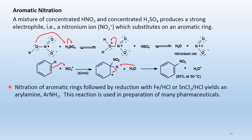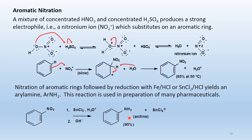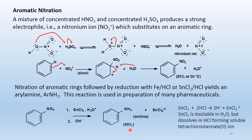Nitration of an aromatic ring followed by reduction — using iron in HCl or stannous chloride (SnCl2) in HCl — yields an aryl amine such as aniline. This reaction is used in the preparation of many pharmaceuticals. Nitrobenzene is reduced by SnCl2 in acid, followed by basification with hydroxide, producing aniline in high yield. SnCl2 is insoluble in water but dissolves in HCl, forming the tetrachlorostannate(II) ion as the reducing agent; the oxidized form is the hexachlorostannate(IV) ion.